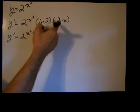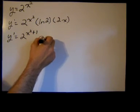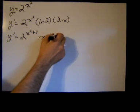That's, you know, this is a 2 to the 1 times x times the natural log of 2.